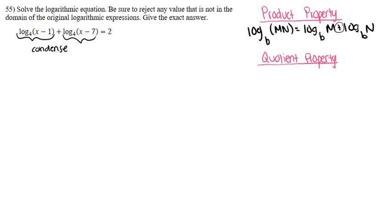Our next property is the quotient property, and that is when you have a log base b of m divided by n, and that expands down to log base b of m minus log base b of n. With quotient property, you always want to subtract the logs.